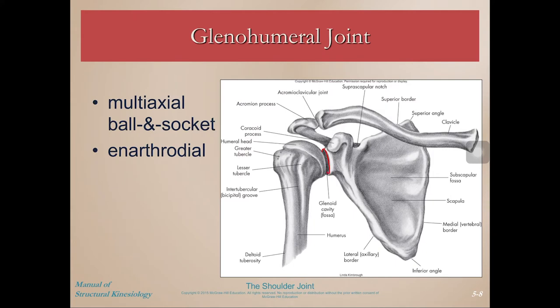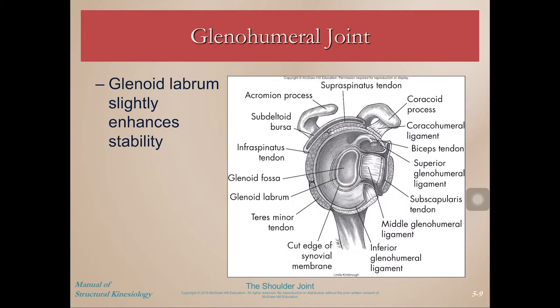Here we can see the glenohumeral joint — this is the shallow glenoid fossa, which is essentially all of the articulation between the scapula and the humerus, so not very much surface area contact. For review: the coracoid process, the acromion process, the AC joint between them, and at the sternal end of the clavicle, the SC joint. When we look at the glenoid fossa straight on, we can see the glenoid labrum that wraps around the fossa and enhances stability slightly.